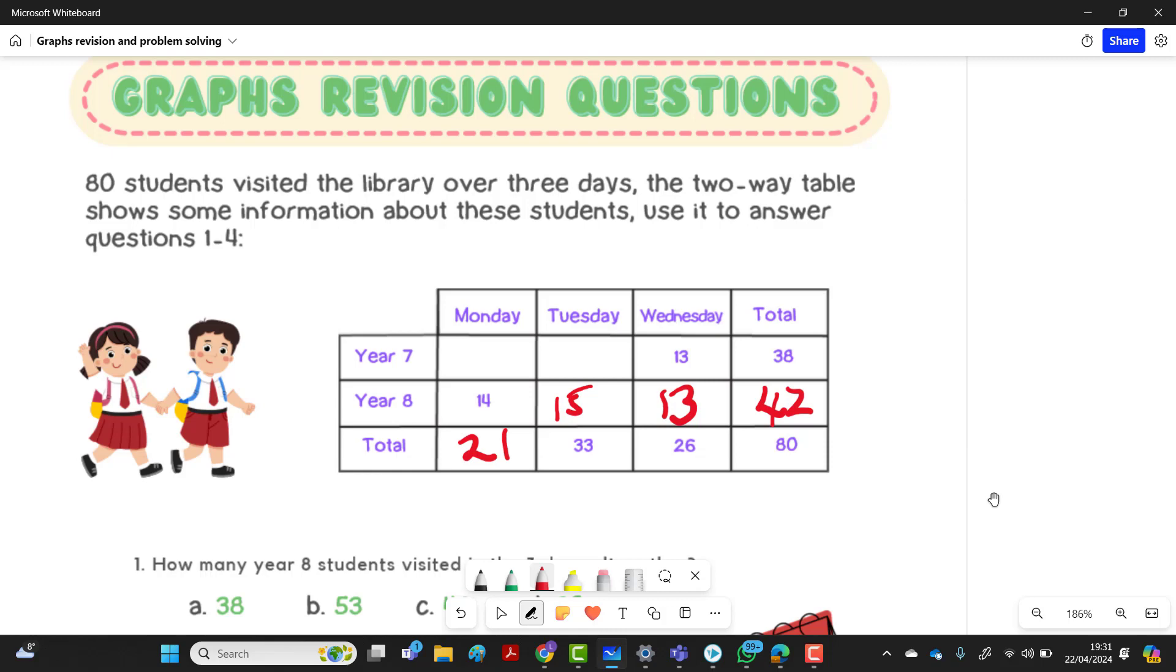We haven't got the total, so we're going to have to do horizontal analysis. The total of all of them, Monday, Tuesday, Wednesday for total, have to add up to 80. So we do 80 take away 26, take away 33, 21 here. And we're going to do year eight, the horizontal row. So you can do 42 take away 13, take away 14, 15.